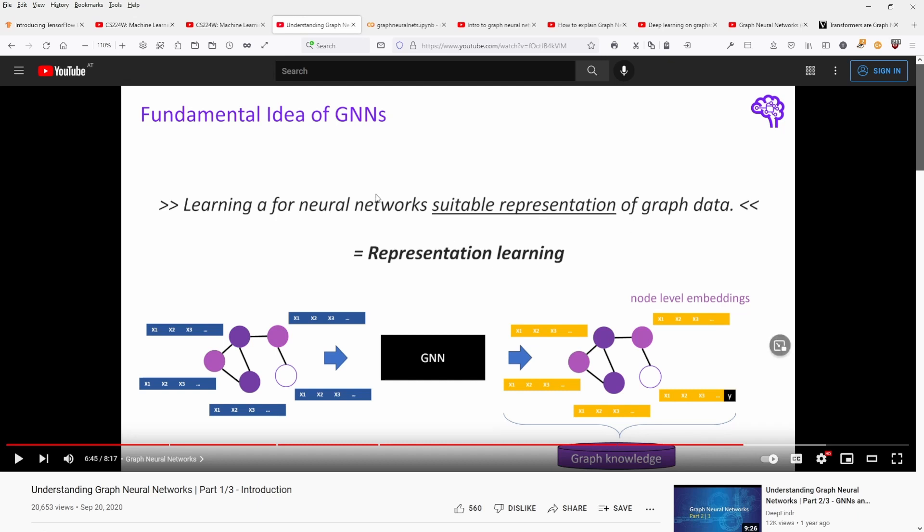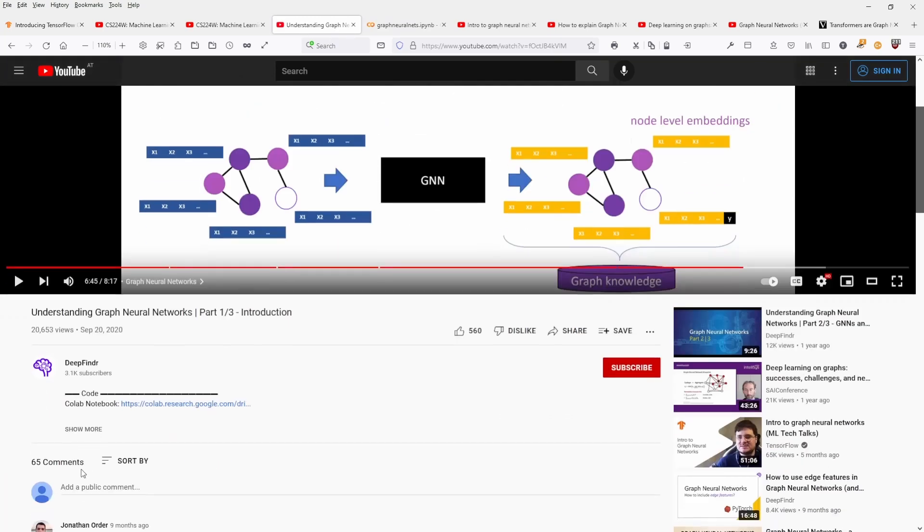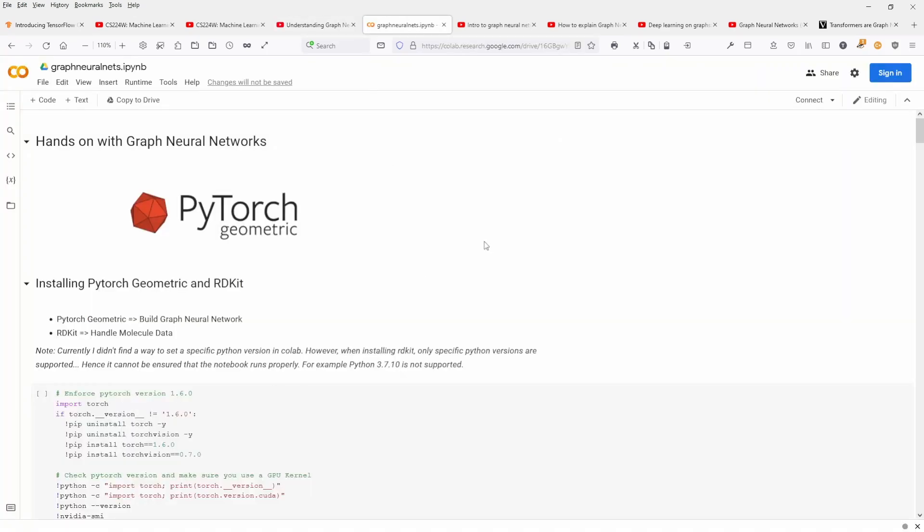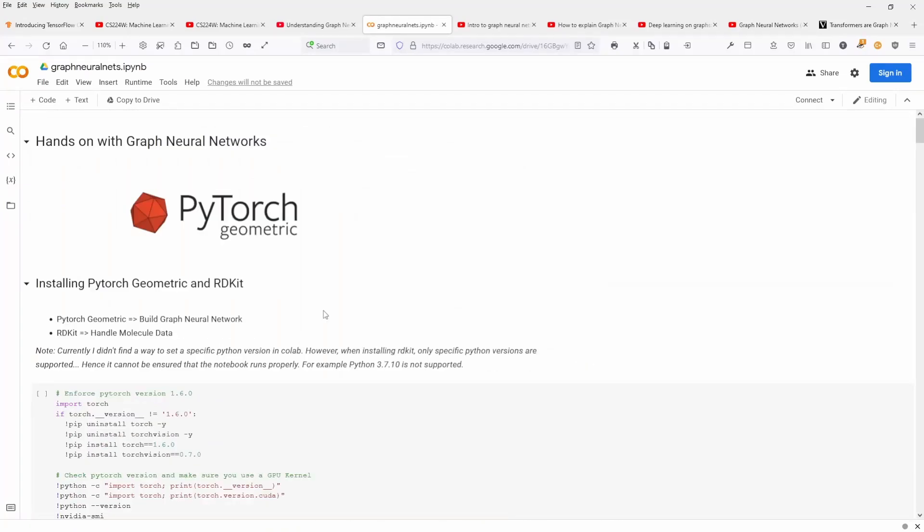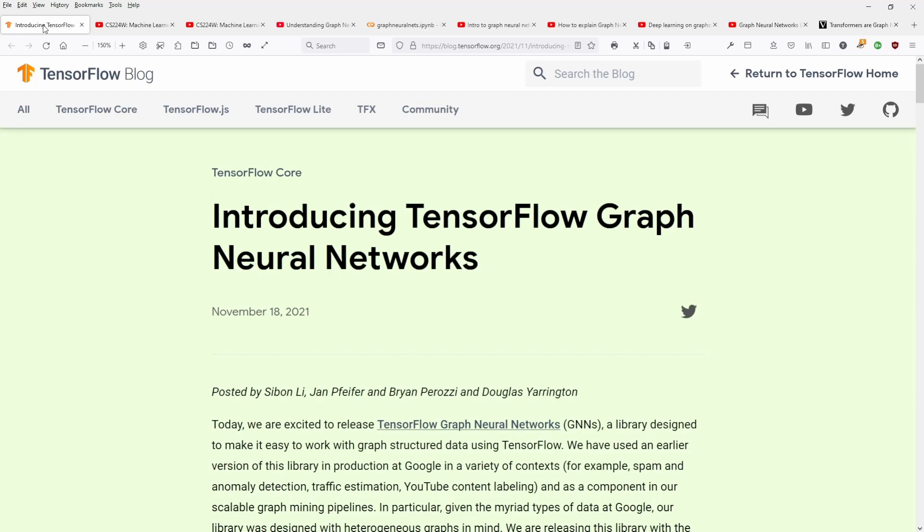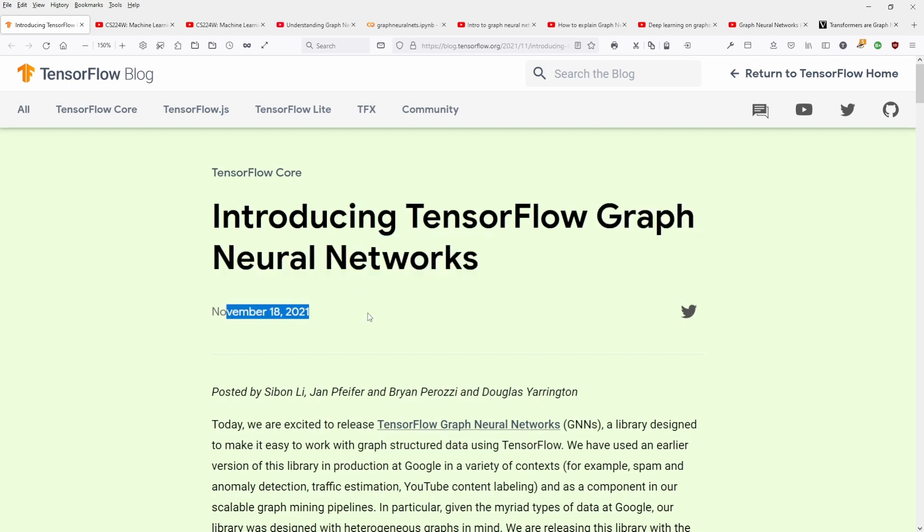Now, the interesting thing is, you have up until now, I use, for example, PyTorch Geometric. There is, if you go here on understanding graph neural networks, you have a very nice Colab notebook for you ready to start. And you can download your notebook. You sign in and you can execute your notebook. You can work with PyTorch Geometric. But of course, I would be interested to learn about the new TensorFlow graph neural networks application. This new library that Google TensorFlow published in November 18, 2021.